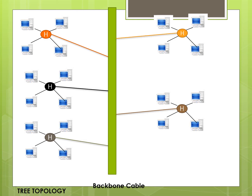I have highlighted the hubs in different colors. If the computer in the orange hub wants to transfer data to another computer in the same hub, the data goes to the hub and then to the other computer. If the computer in the orange hub wants to transfer data to the grey hub, it goes to the orange secondary hub, then to the primary backbone cable, then to the grey hub, and finally to the destination computer.